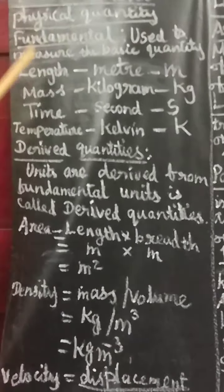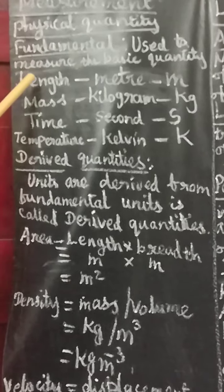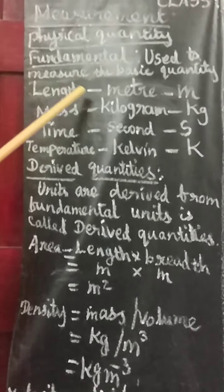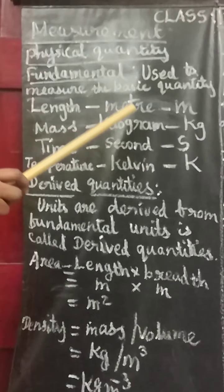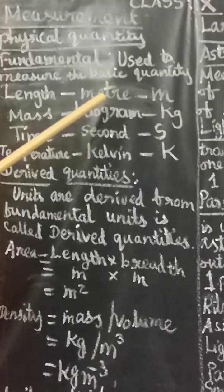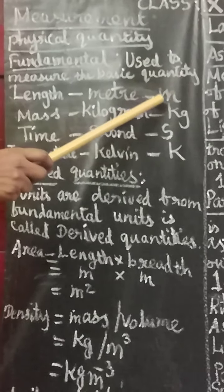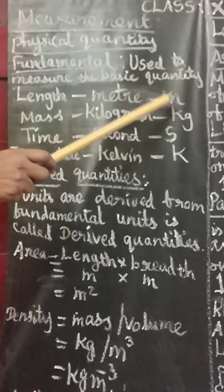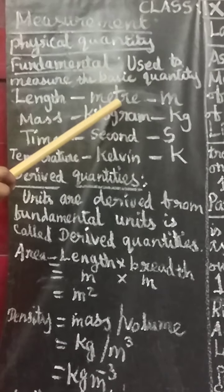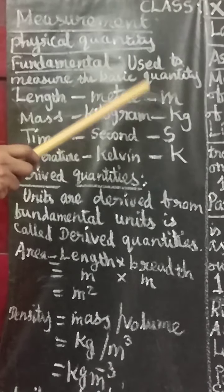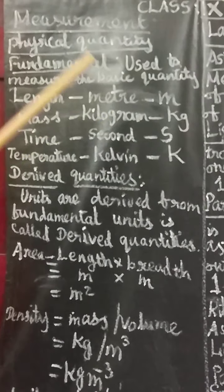The first fundamental quantity is length. What is the unit of length? Meter. M is the symbol of meter.